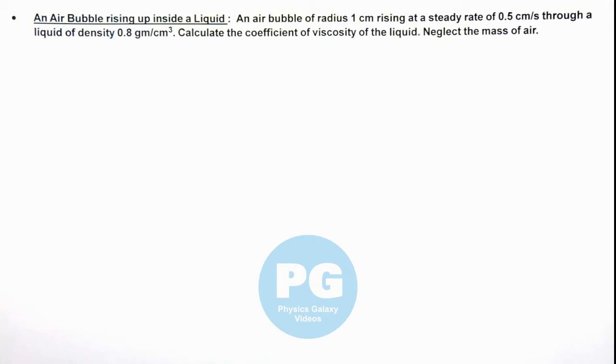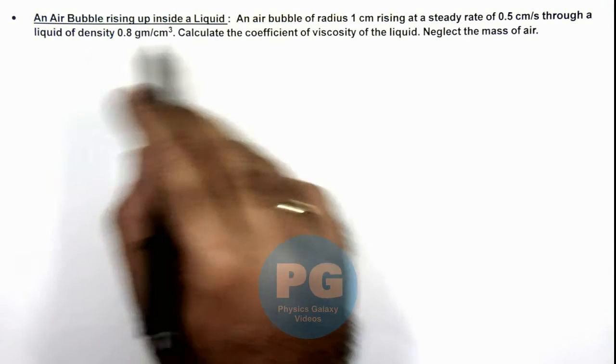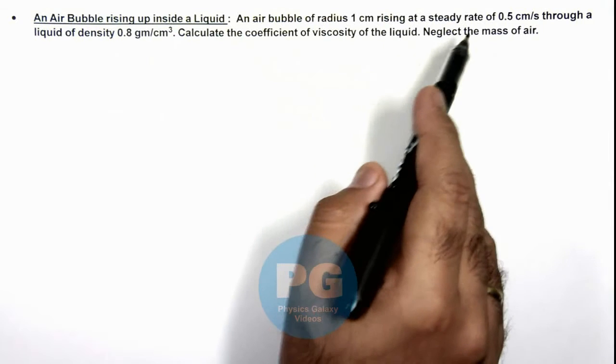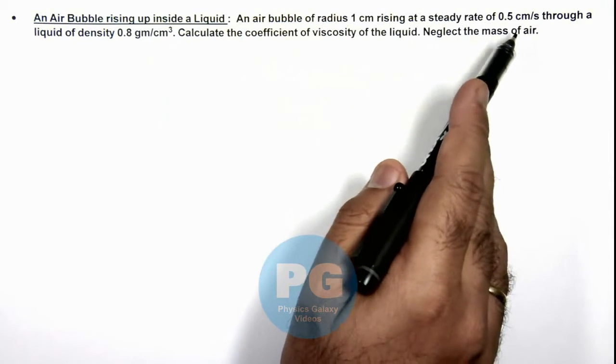In this illustration, we'll analyze an air bubble rising up inside a liquid. We are given that an air bubble of radius 1 centimeter is rising at a steady rate of 0.5 centimeters per second.